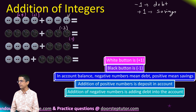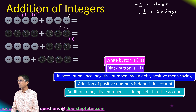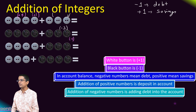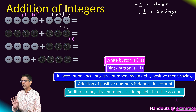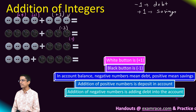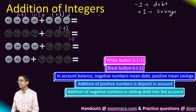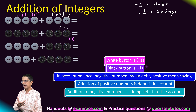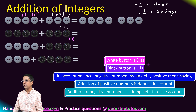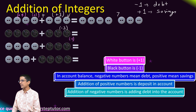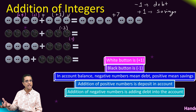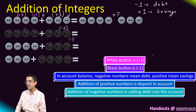Case one: I have a balance of plus four rupees, and I make a deposit of three more rupees — adding positive three. I already had a balance of four, I added three more, so my total balance becomes four plus three, which is seven. This is positive because these are my total savings.